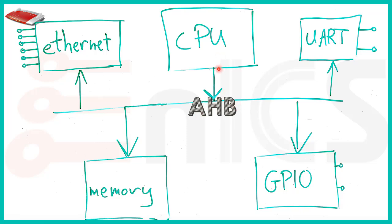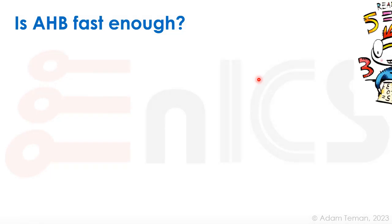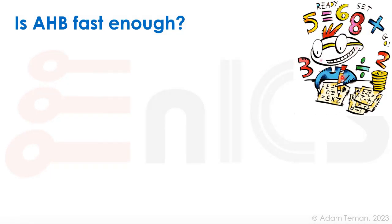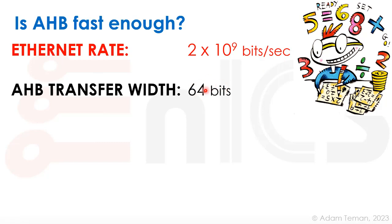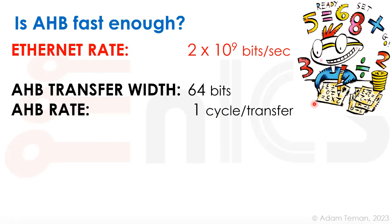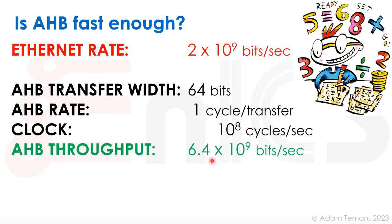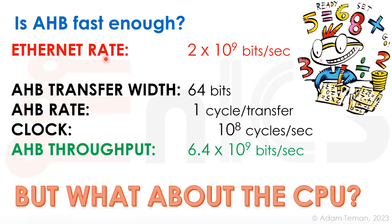Let's verify AHB is sufficient. Our Ethernet rate is 2 Gbps (full duplex). The AHB transfer width is 64 bits, with one cycle per transfer via pipelining. At 100 MHz, that gives us 100 MHz × 64 bits = 6.4 Gbps throughput — well above our 2 Gbps Ethernet requirement. But we forgot to ask an important question: what about the CPU?